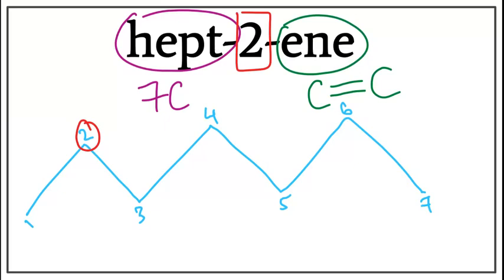So let's get rid of these numbers and add the second bond between the second and the third carbon. This is the double bond added between the second and the third carbon. This is the structure for hept-2-ene.